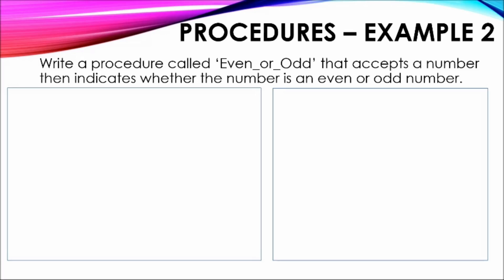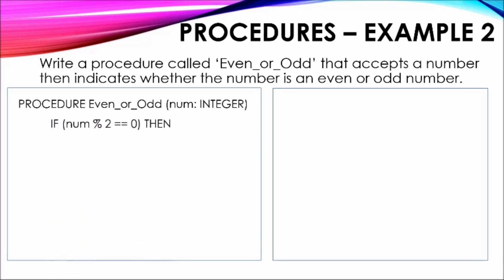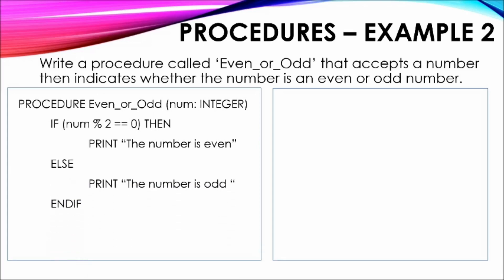The solution shows the procedure definition containing the name of the procedure and an item being passed to it. The variable name as well as its data type make up the parameter being transferred. An IF statement is then used to evaluate whether the number passed to the procedure is even or odd. This is done by checking if the number MOD 2 is equal to zero. If it is, then 'the number is even' is shown; otherwise, 'the number is odd' is displayed. The IF statement and module then terminate.